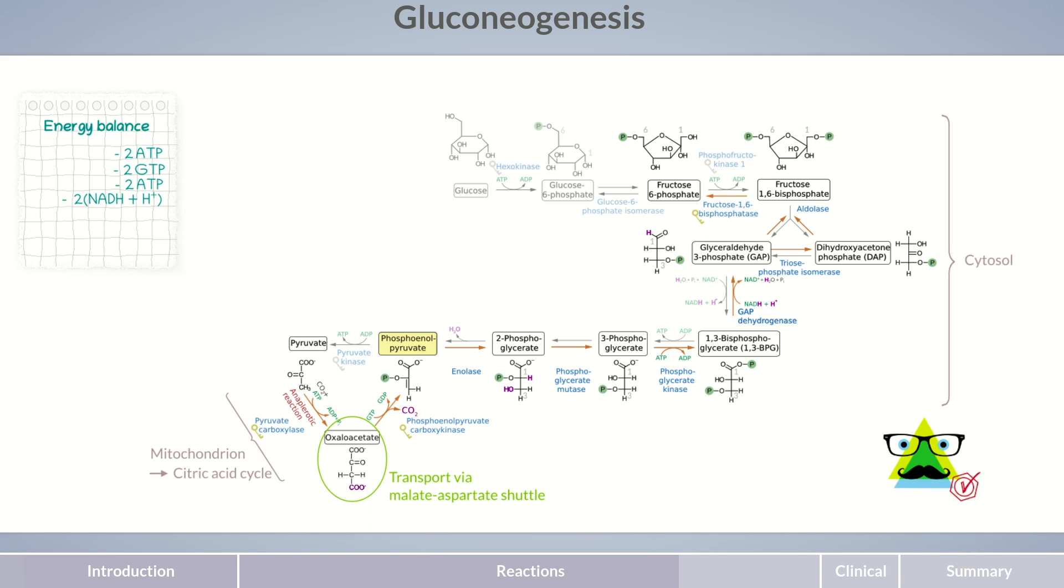In the following step, fructose 6-phosphate is converted to glucose 6-phosphate by an enzyme from glycolysis. However, glucose 6-phosphate can't be converted into glucose by hexokinase from glycolysis.